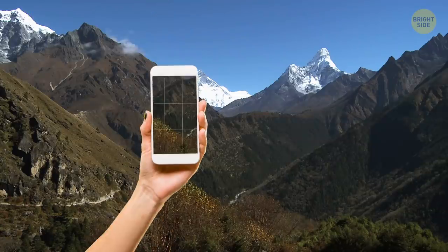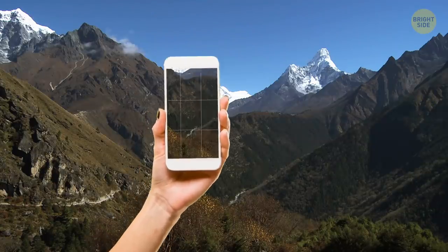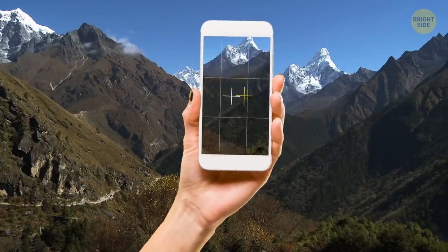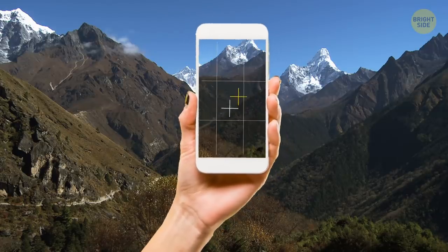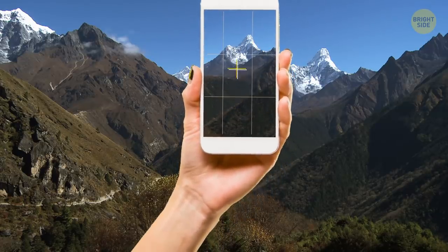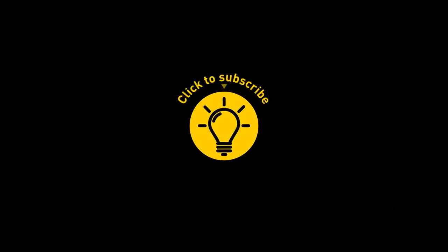To take a perfectly level top-down photo, use the built-in camera level feature on your iPhone. Point the camera straight at an object and slightly move the phone until the white and the yellow crosses on the screen meet. Good luck!